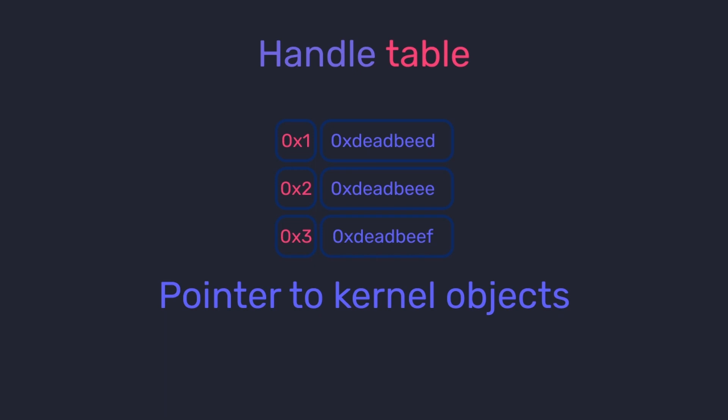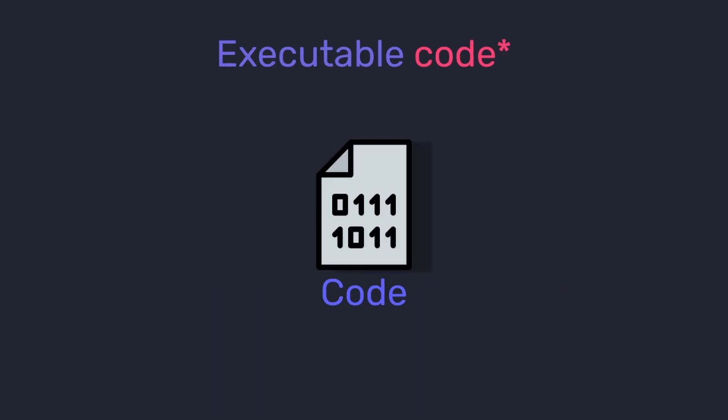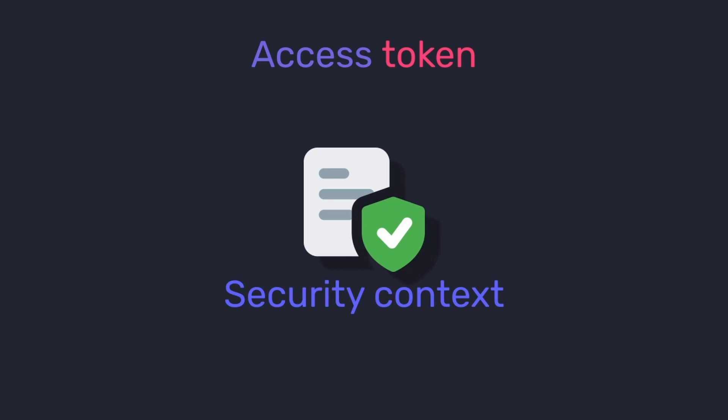Each handle is assigned a number, and this number is stored in the handle table along with a corresponding kernel mode memory address of a certain object. This table is stored in the kernel mode part of the virtual memory of a process, so it cannot be accessed by the user mode code. The next thing every process has is the executable code, which is stored in the virtual address space of the process and is used by the threads for execution.